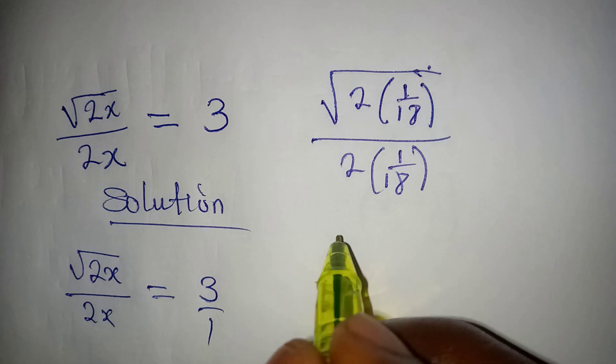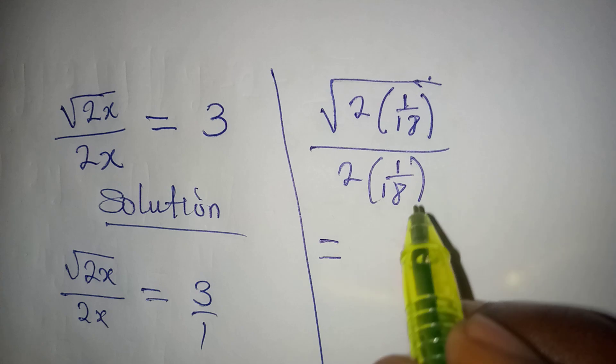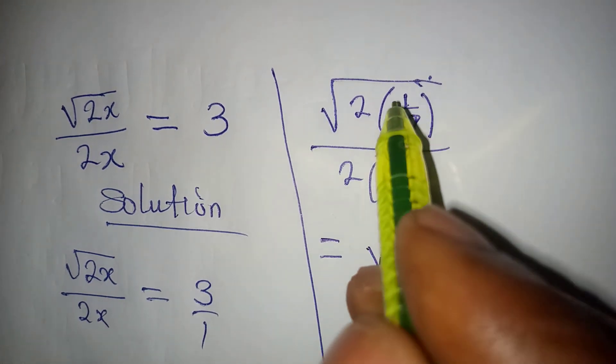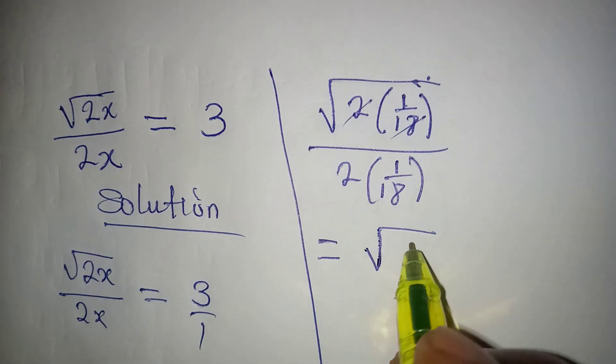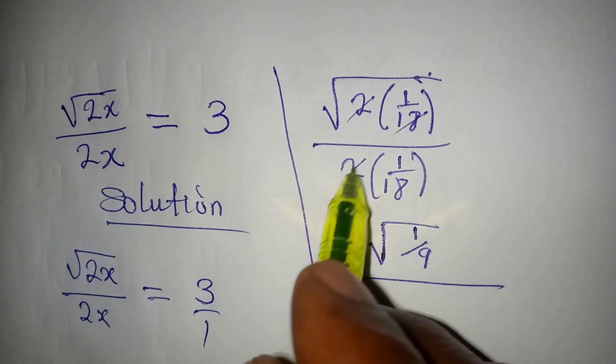We are going to have square root of 2 into 18 is 9, so we have 1 over 9, all over 2 into 18 is 9, so we have 1 over 9.